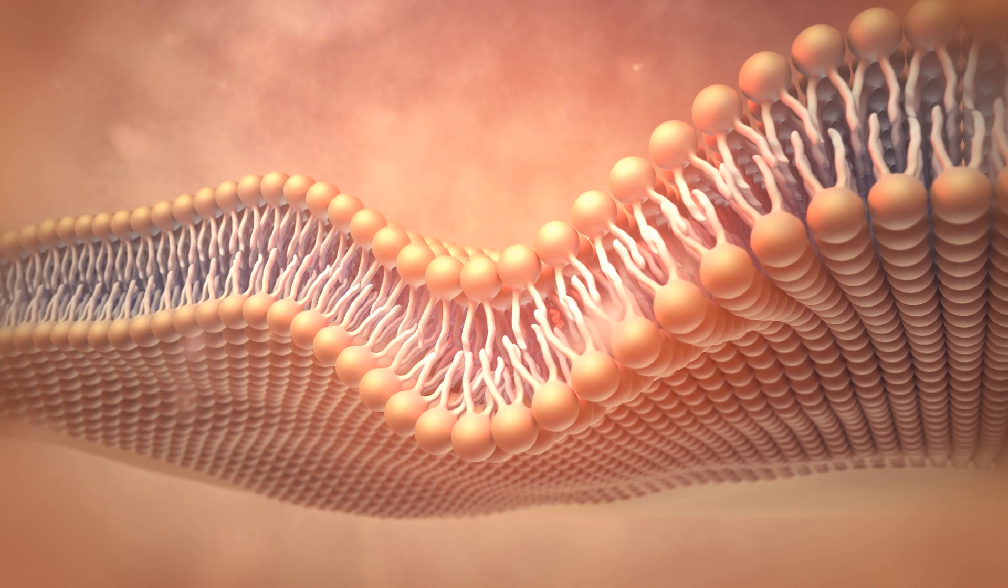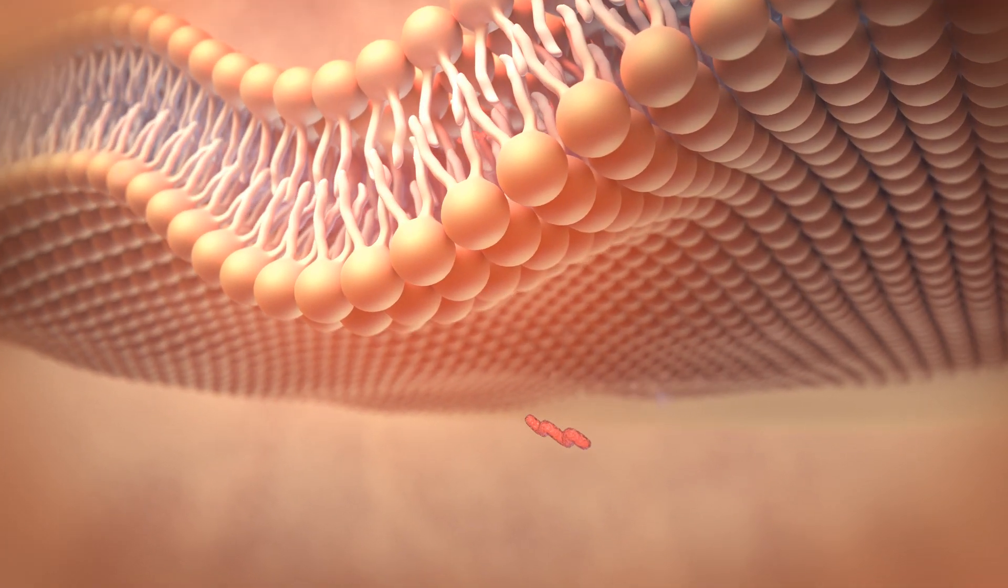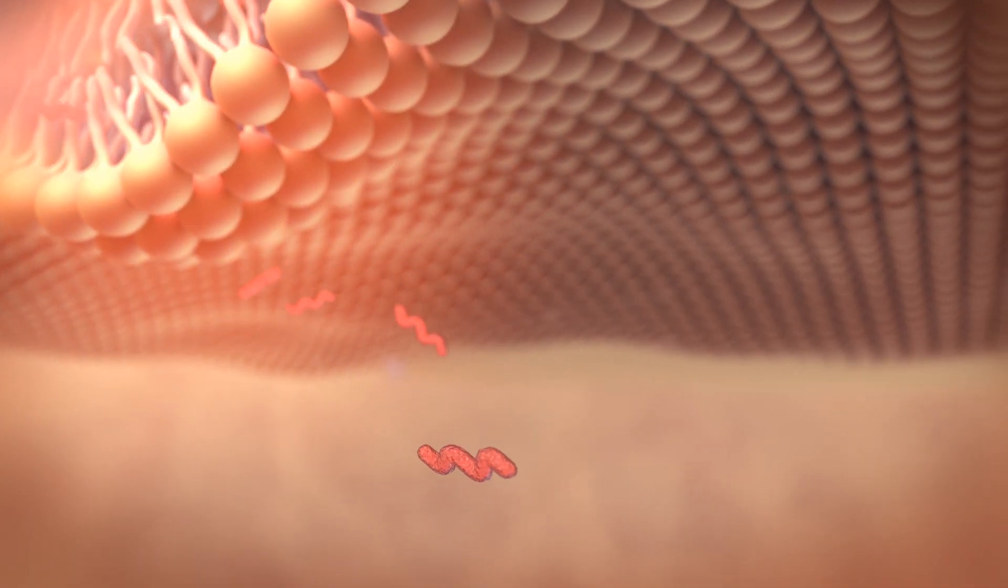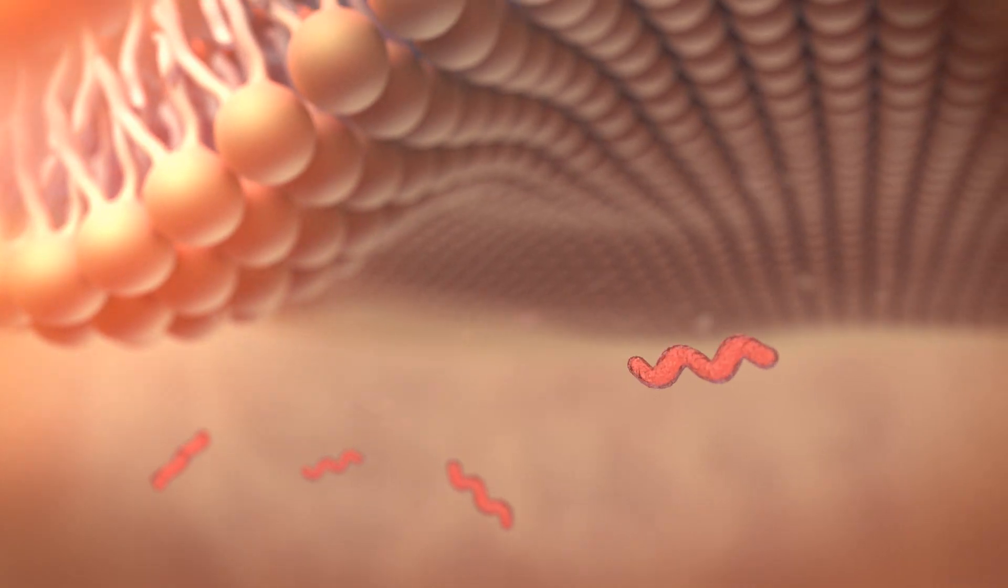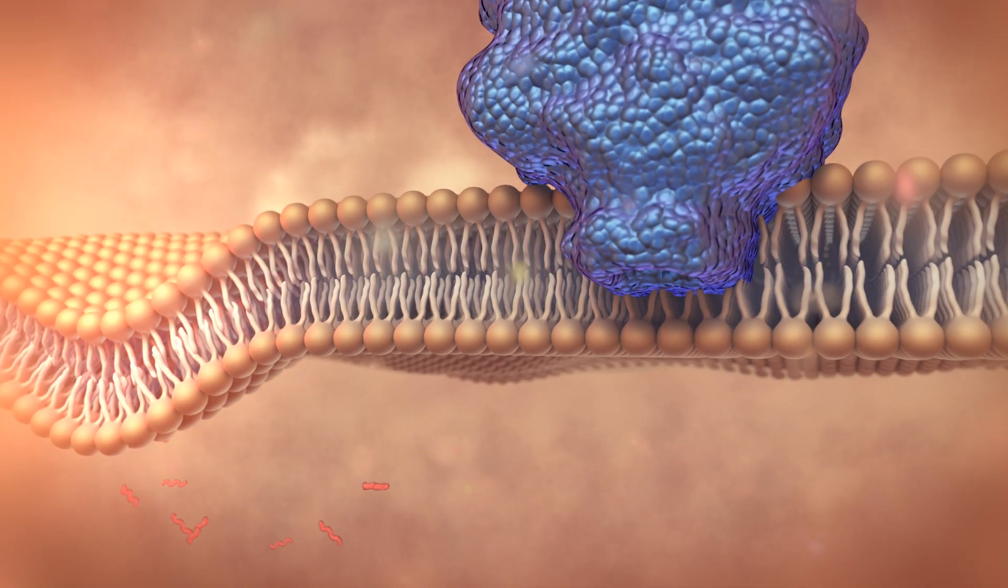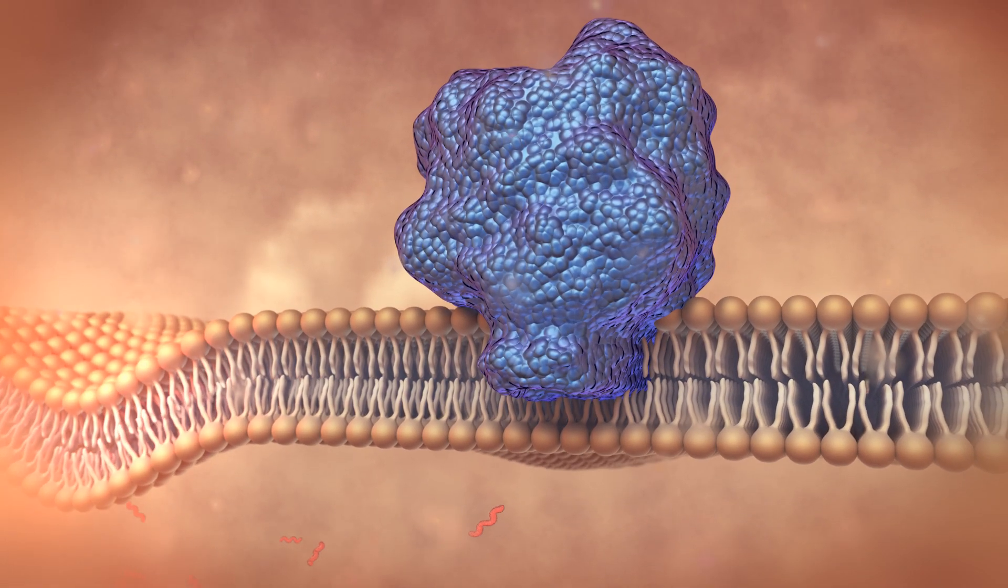The cell membranes immediately release fatty acids, shown here as long red chains. The fatty acids enter an enzyme, cyclooxygenase, anchored in the cell membrane.